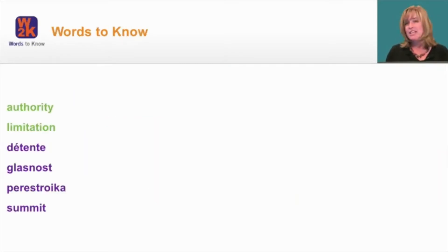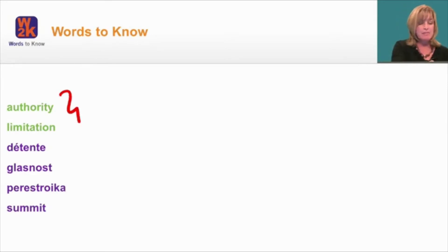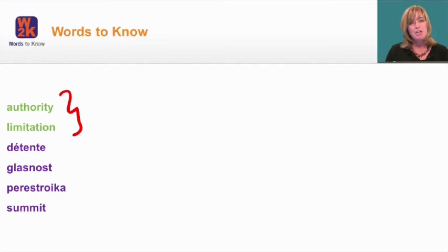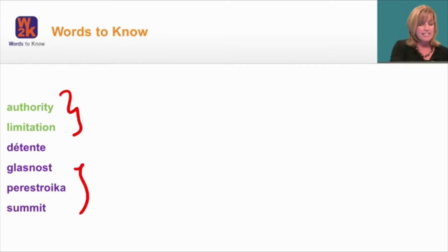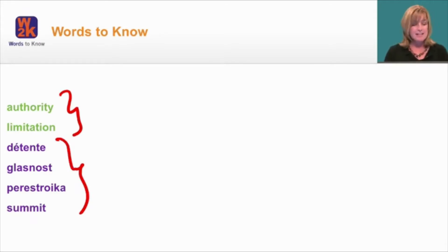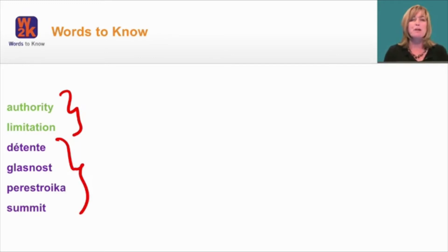Let's take a look at our words to know for this lesson. You have two academic vocabulary words: authority and limitation. You also have some domain-specific words: detente, glasnost, perestroika, and summit. You may want to jot these words down and make note of them as you learn about them in the lesson.